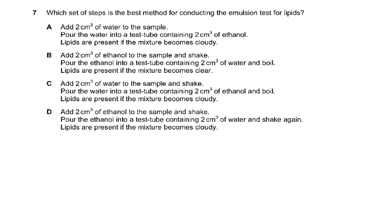Question 7 was a very good question on the ethanol emulsion test. The best method: first add ethanol to the sample — the lipid dissolves in the ethanol because ethanol is an organic solvent. Then pour the ethanol into a test tube containing water and shake it. When you add the water the mixture becomes cloudy, indicating lipids are present. The answer is D.